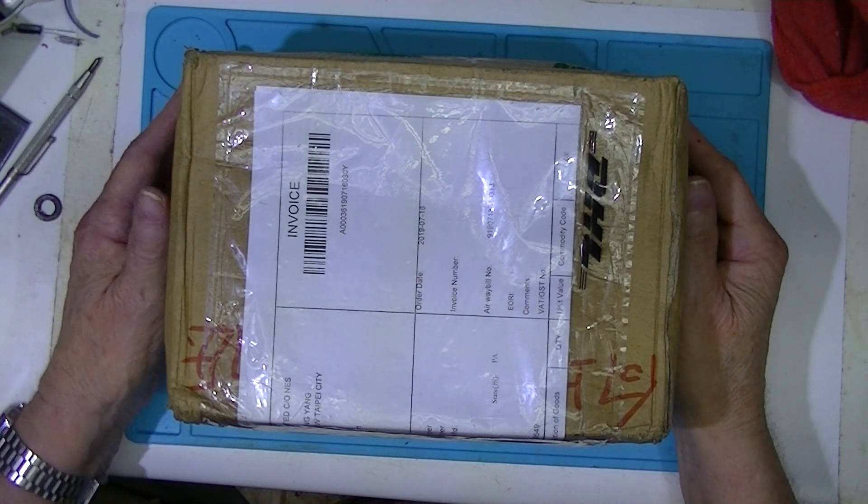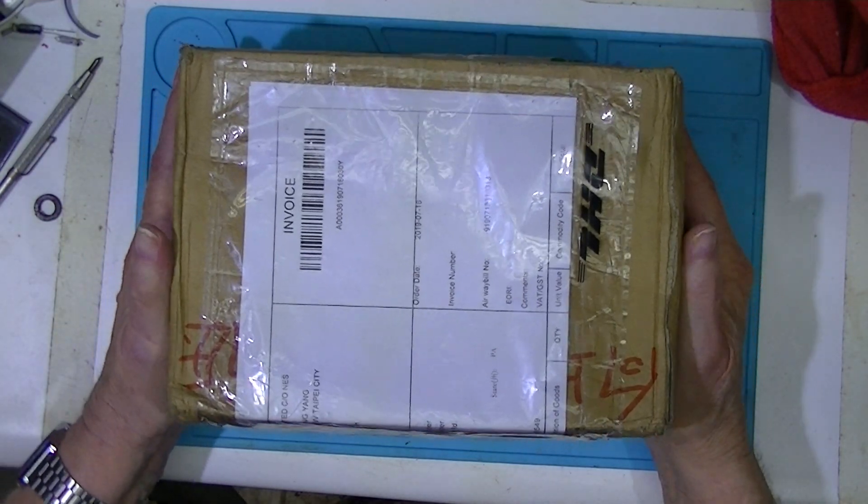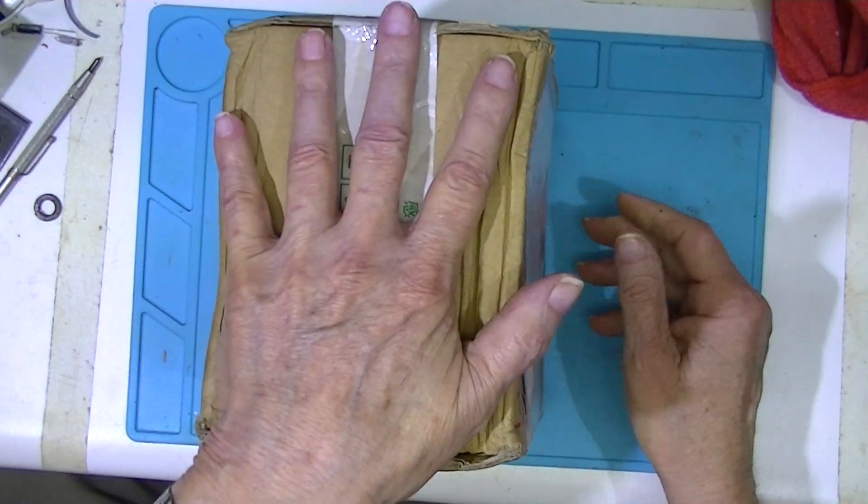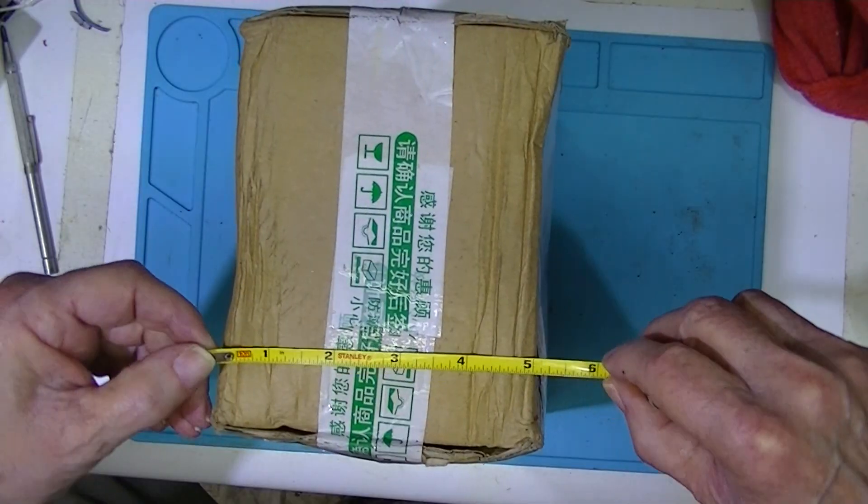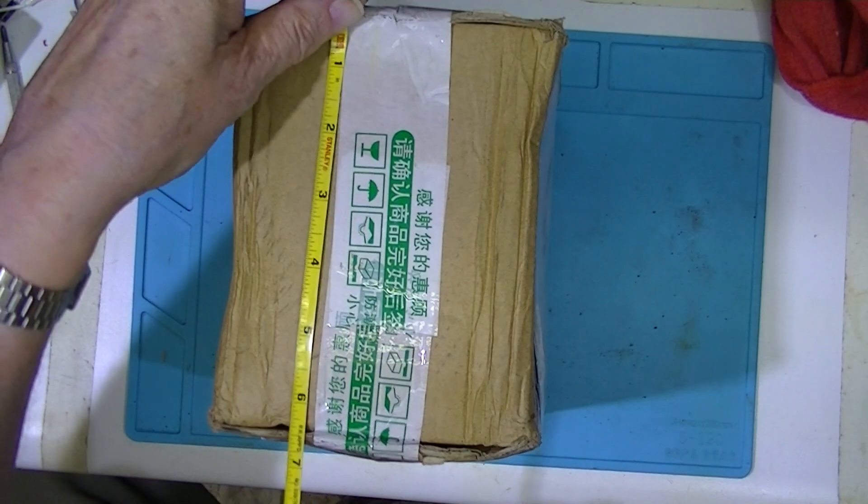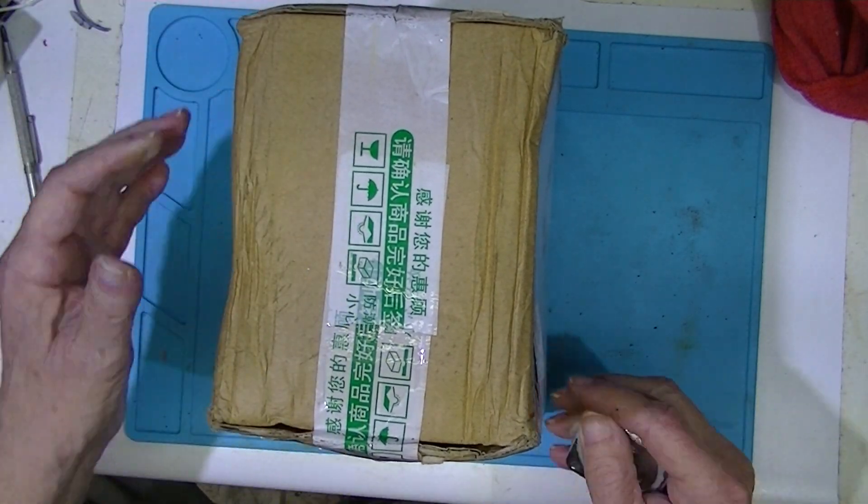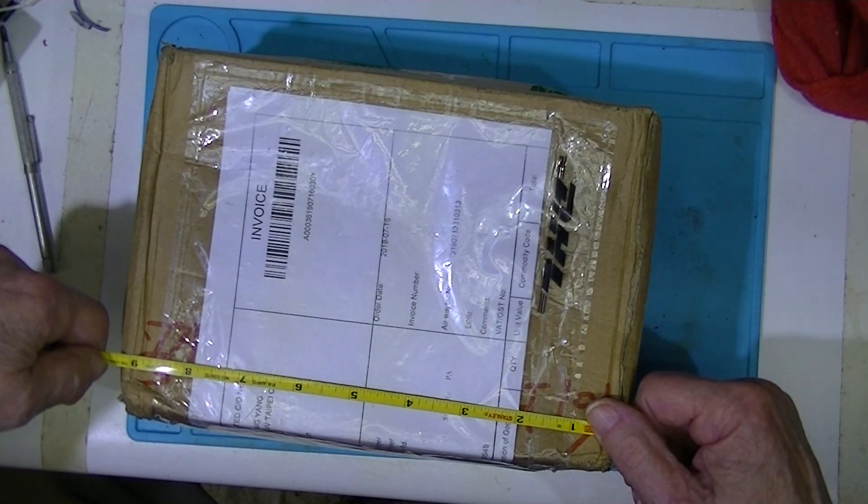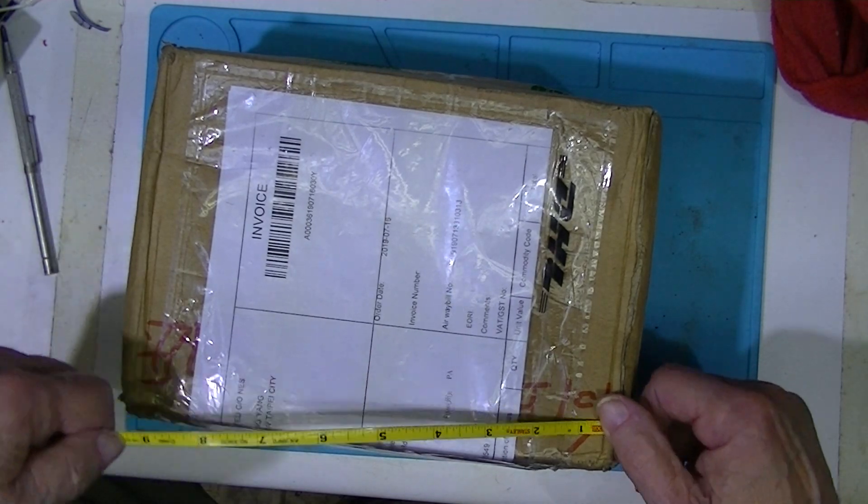This box arrived from DHL today and you can see about how big it is. The box is about five by six and a half by nine.